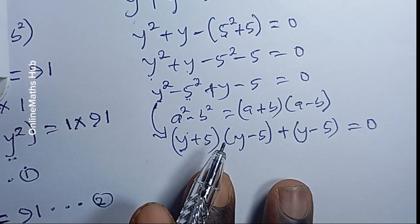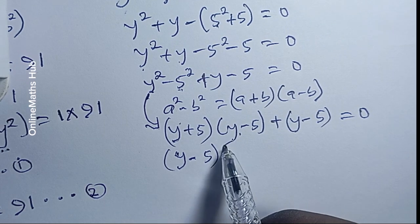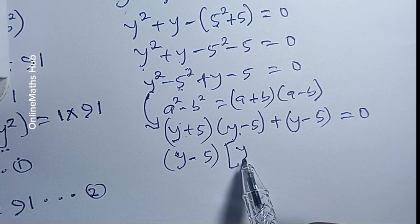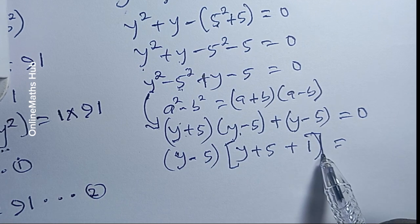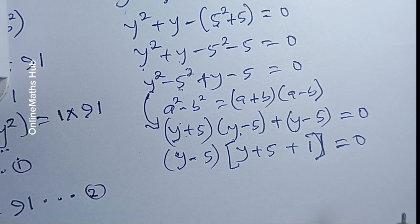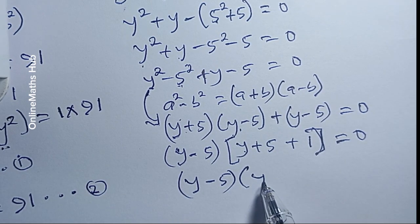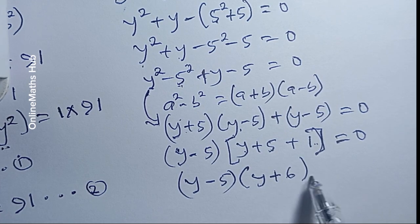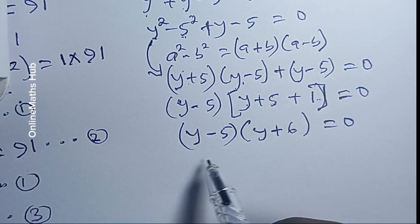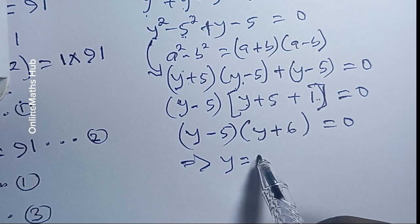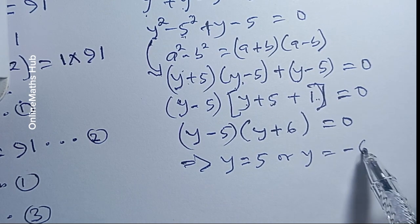Factoring out the common term (y minus 5), we get (y minus 5)(y plus 5 plus 1) equals 0, which simplifies to (y minus 5)(y plus 6) equals 0. Using the zero product property, this implies y equals 5 or y equals negative 6.